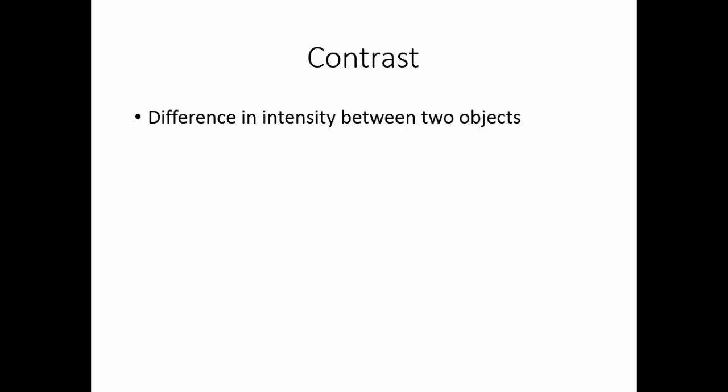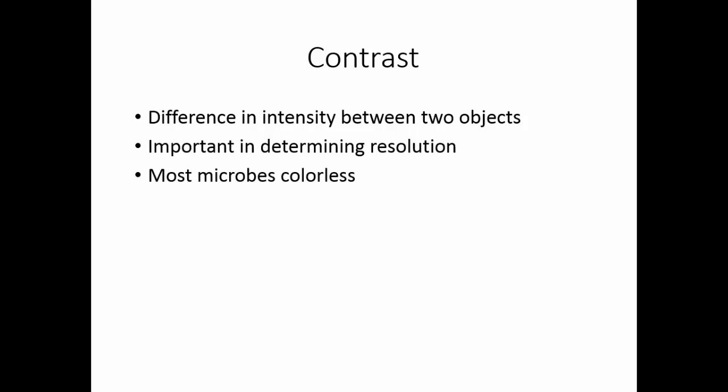Contrast is the difference in intensity between two objects, and it is an important factor in determining resolution. If two things are very similar in color, it's hard to tell them apart — for example, a polar bear in a snowstorm versus a grizzly bear in a snowstorm. Most microorganisms are colorless, so we use staining techniques to give them color and improve contrast. We can also get light out of phase: our eyes can detect if wavelengths of light do not hit at the same time, so changing the phasing of light allows us to see differences.